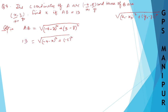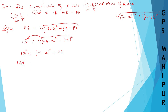Transfer the root to the other side — it becomes a square. So 13 squared equals (-4 minus x) whole square plus 5 squared, which is 25. Now 13 squared is 169.